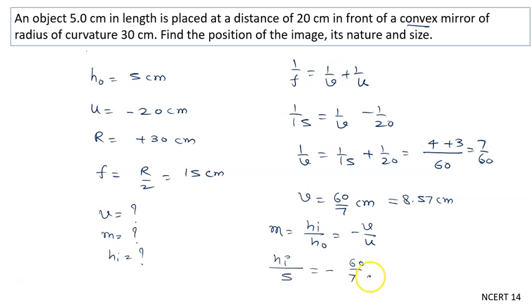This equals 3/7. So height of the image will be 3/7 times 5. Height of the image is 15/7.